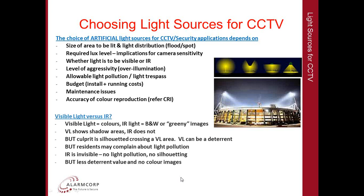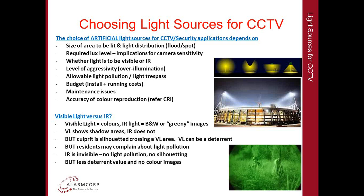Visible light versus infrared. Visible light gives you the option to display accurate colors; infrared light gives you either black and white or green images. Visible light creates bright areas and shadow areas, while infrared does not show this unless someone is using IR-sensitive goggles. Any culprit or intruder will be silhouetted across a visible light area, so visible light can be a deterrent — however, residents may complain about light pollution. Infrared light is invisible, there is no light pollution and no silhouetting, but it has less deterrent value and you cannot get color images.